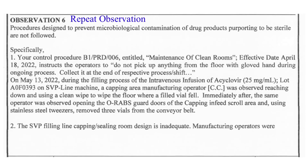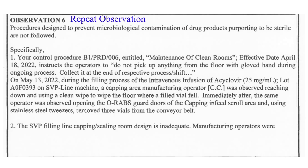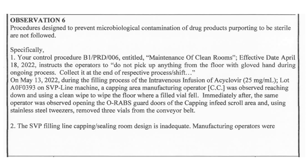Observation number six, categorized as a repeat observation: procedures designed to prevent microbiological contamination are not followed. Auditors gave three examples. One example: per SOP, operators should not pick anything from the floor with a gloved hand during ongoing process. However, on 13th May 2022, auditors observed an operator reach down to wipe the floor with a clean wipe where a filled vial had fallen, and immediately after, the operator started opening the RABS guards.